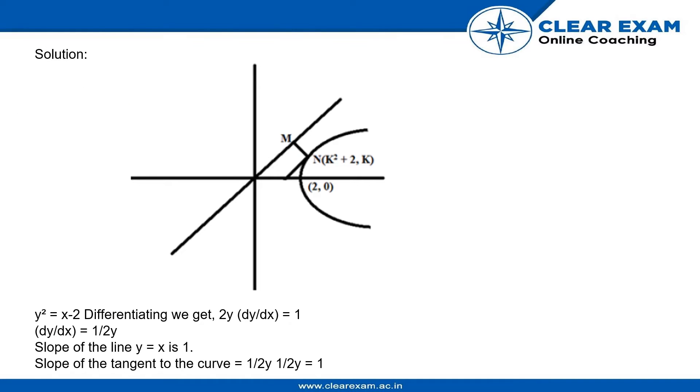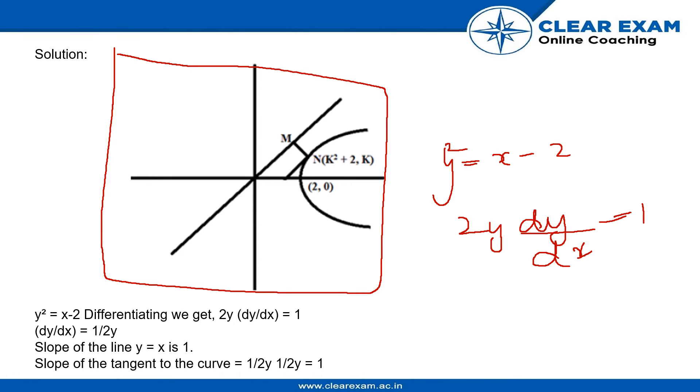So, for the solution, we will be making this graph. As y square is equal to x minus 2, differentiating it, we will get 2y dy by dx equal to 1, which is nothing but dy by dx is equal to 1 by 2y.